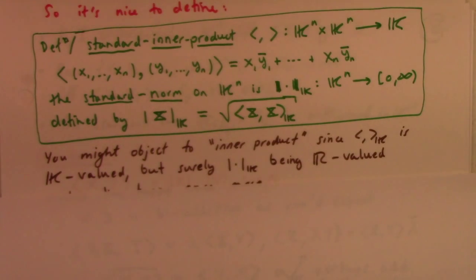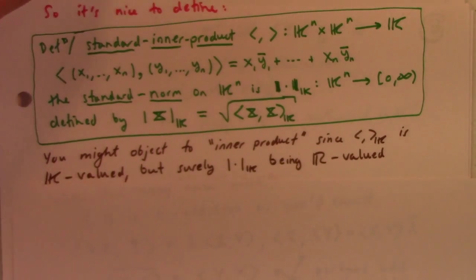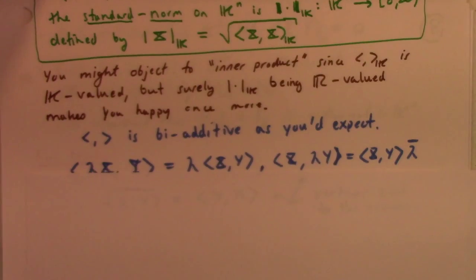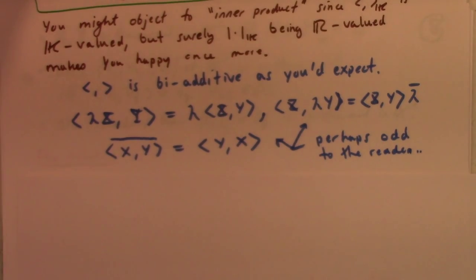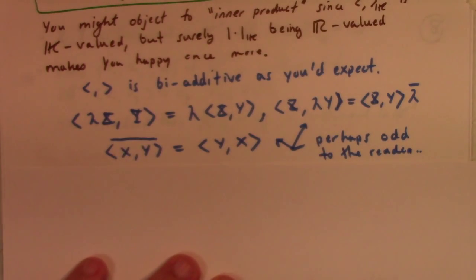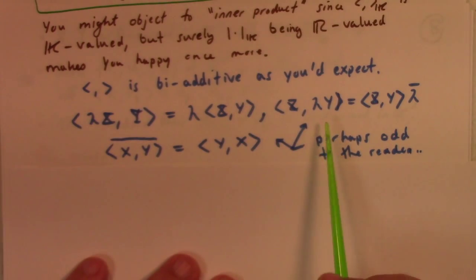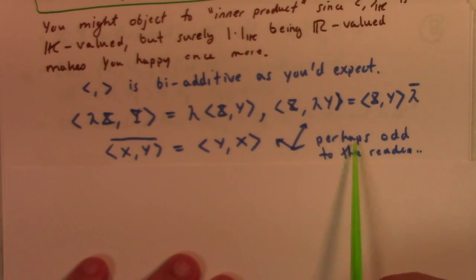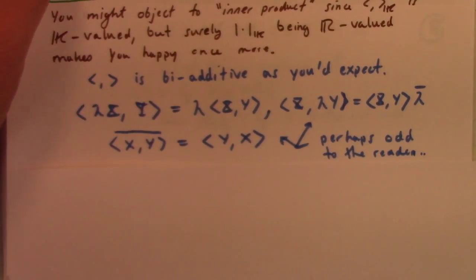You might object to the terminology of the inner product since it's K-valued, but inner products don't have to be real-valued. On a complex vector space you talk about a complex-valued inner product — that's standard — and this just extends that notion to quaternions. The inner product is biadditive, and sometimes it's called sesquilinear because you can pull a constant out on the first entry freely, while on the second entry it pulls out on the right as the conjugate. So it's like one-and-a-half times linear.